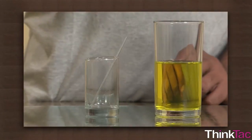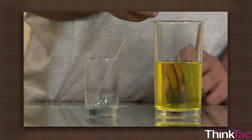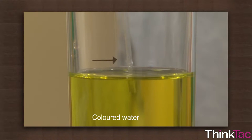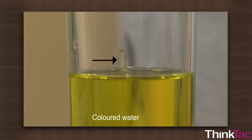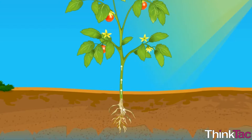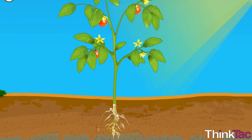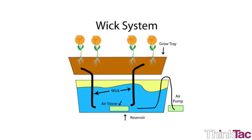All sub-irrigation systems rely on capillary action to move water up through the growing media against gravity. Capillarity is a result of the attraction of water molecules to each other and to another surface. It is the natural capillary action of the soil to move water up to the plants efficiently, reducing the usage of water and thus the overall cost. This capillary system delivers water to the root zone where it is needed most.